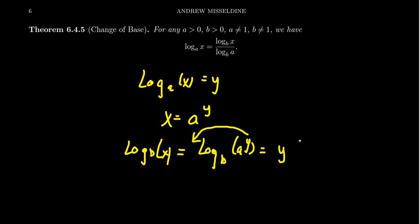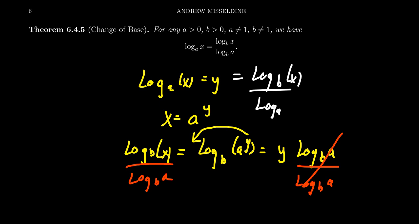So this becomes y times the log base b of a in this situation. So what you're going to then do is you're going to divide both sides of the equation by log base b of a. So that cancels out over here. And so then what we see is you see that y is also equal to the log base b of x over the log base b of a.